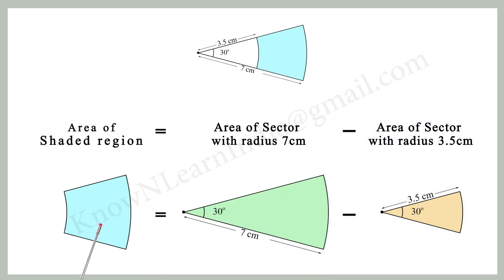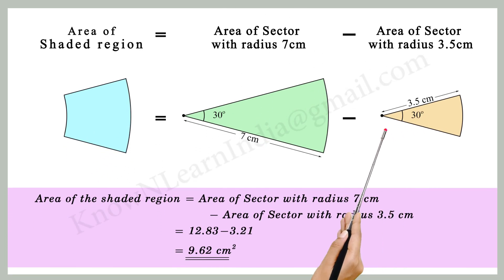Area of the shaded region is equal to area of sector with radius 7 cm minus area of the sector with radius 3.5 cm. Substituting the values, area of the shaded region is equal to 12.83 minus 3.21 is equal to 9.62 cm square.